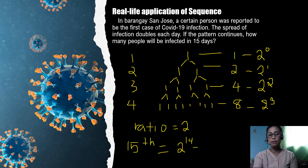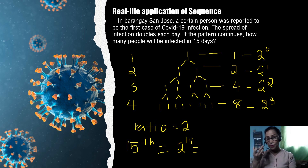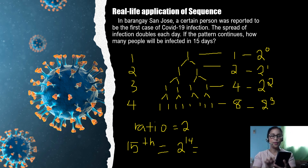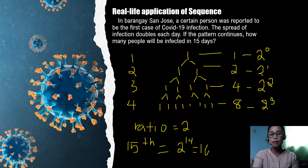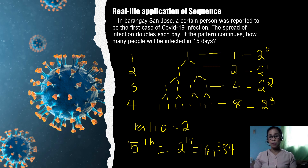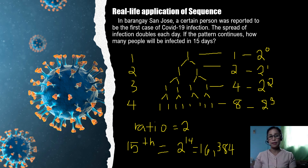Let's solve two raised to the 14th power. We cannot do this manually, so we make use of our calculator. Two raised to the 14th power equals 16,384. I hope I was able to answer this very realistic problem — especially during a pandemic — and that you have learned the lesson well today. Thank you.